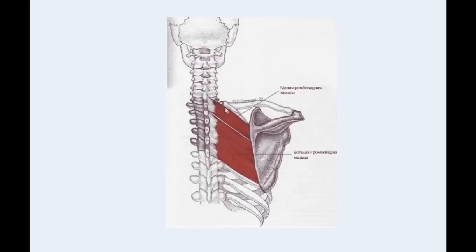In addition, it is divided into two parts: the minor rhomboid muscle and the major rhomboid muscle. The minor rhomboid muscle goes from the spinous process of the 7th and even the 6th cervical vertebrae to the corner of the scapula. And the major rhomboid muscle goes from the spinous processes of the 1st to the 5th thoracic vertebrae, also to the same place, to the corner of the scapula.